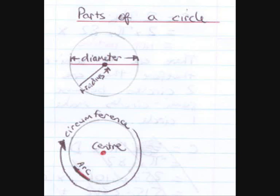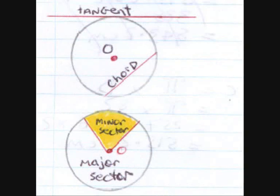And right in the middle you have got the centre. While the tangent is a line outside the circle which touches the side of the circle.